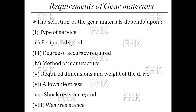What requirements must a material meet to manufacture a gear? The selection of gear material depends upon: first, the type of service; second, the peripheral speed — that is, the rotating speed of the gear, since a gear is a rotating machine element; third, the degree of accuracy required; and fourth, the method of manufacturing. Some gears are manufactured by forming methods, some by casting methods, and some by machining methods. Depending on the manufacturing method, you select the material for the particular application, along with the required dimensions and weight of the drive.